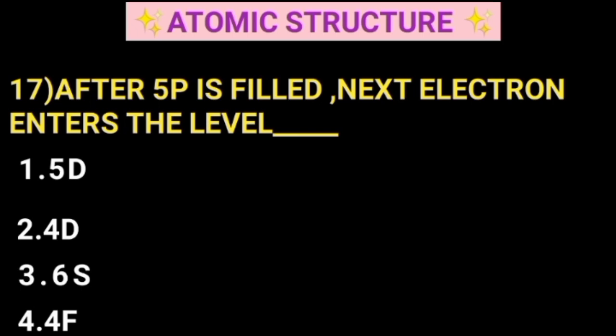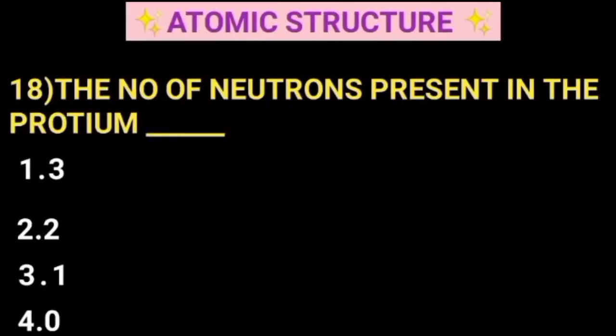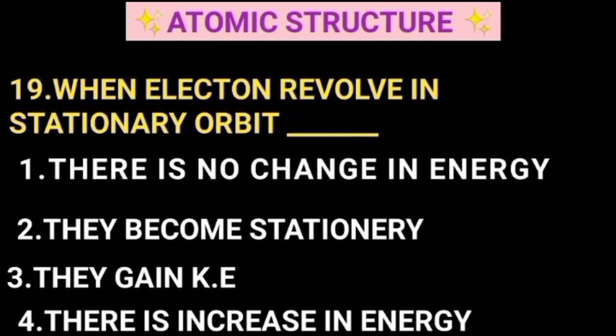If you have any time to prepare for entrance exams, you should choose the question. The number of neutrons is present in the protium: 3, 2, 1, or 0. Maximum you can find the answer to this one. No problem. You can find the telegram. When electron revolves in stationary orbit, if electron revolves around the orbit, there is a state of the orbit.